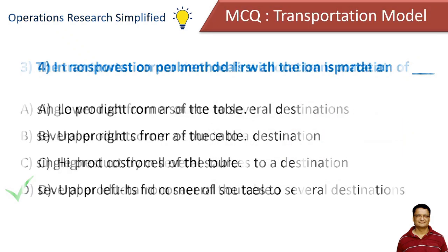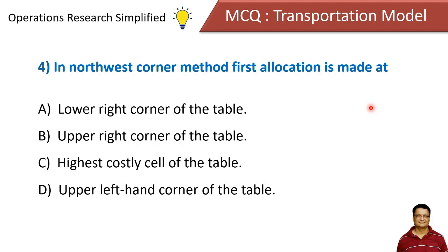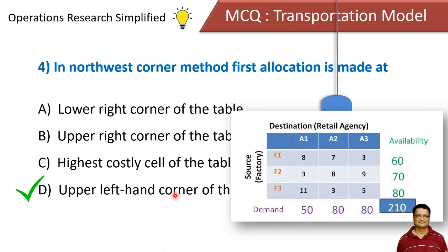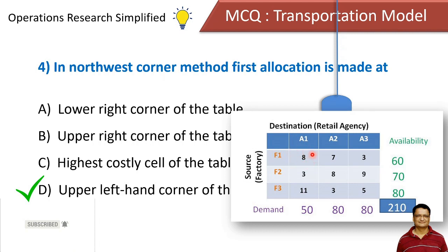In the northwest corner method, the first allocation is made at: the lower right corner, upper right corner, highest costly cell, or upper left-hand corner of the table. The correct answer is the upper left-hand corner of the table. In a typical transportation cost matrix, we make the first allocation at the cell on the upper side and left side corner.